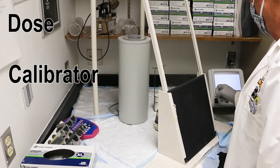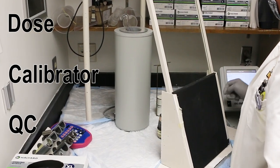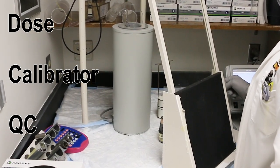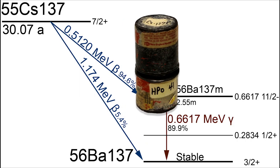Reproducibility means measuring the activity of a known source over a long period of time. The dose calibrator is checked for constancy with a long-life dedicated check source. We use cesium-137, which has a 30-year half-life.